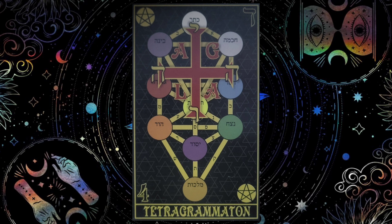As discussed previously, Yad plus He represents the Most High God and the Shekinah working together to produce the Messiah. 10 plus 5 equals 15, which equals 1 plus 5, equaling 6. Vav has a value of 6 and is associated with the Sephirot of Tifereth and Yeshua.